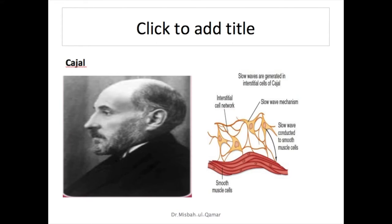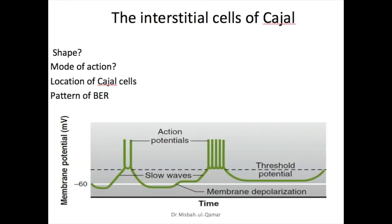The description of slow waves remains incomplete without mentioning the interstitial cells of Cajal, which serve as electrical pacemakers for smooth muscle cells. These stellar-shaped mesenchymal cells have smooth muscle-like features. They form a network with each other and are interposed between smooth muscle layers, also connected with smooth muscle cells by gap junctions so that electrical activity generated by these cells spreads to adjacent smooth muscle cells.